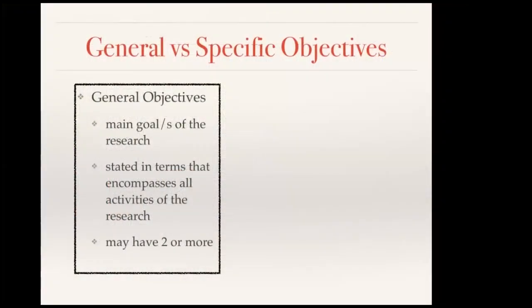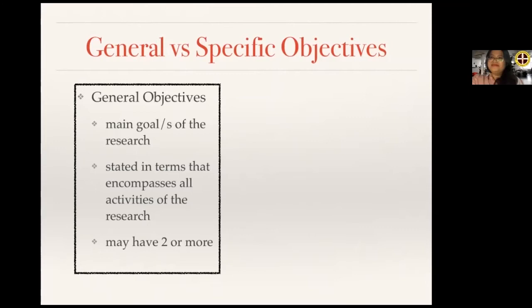So what are general objectives? General objectives are actually the main goal of the research. It's sort of like the mission and vision of your study. It's basically stated in terms that encompasses all activities of the research. And in some cases, you may actually have two or more general objectives, especially if you have several studies under one umbrella major study.